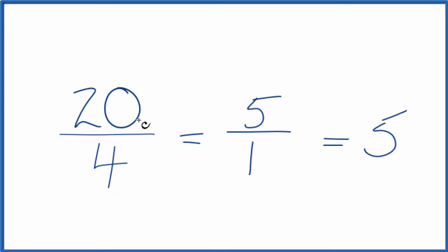So when we simplify the fraction 20 fourths, we either get 5 over 1, or just the whole number 5. This is Dr. B, and thanks for watching.